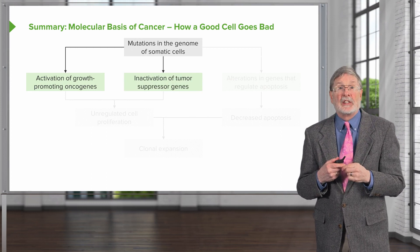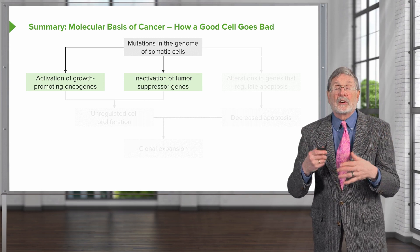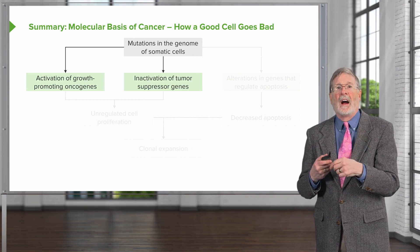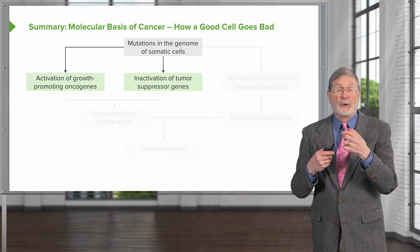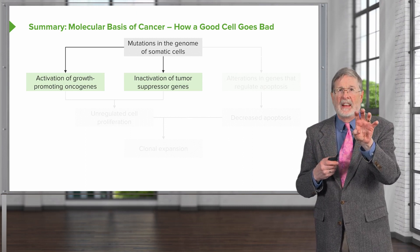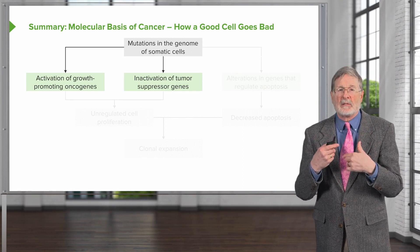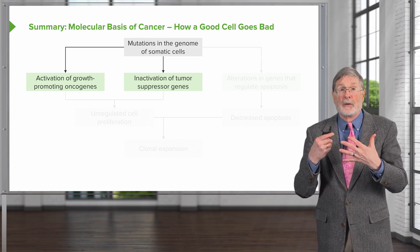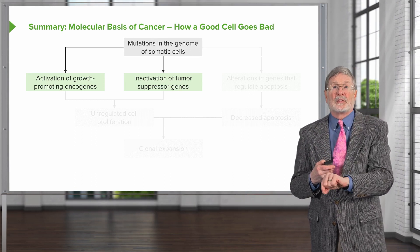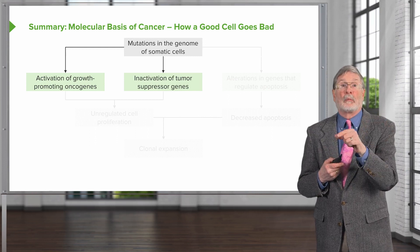Alternatively, you can have inactivation of tumor suppressor genes. As we've evolved over time, cells know there is the potential to acquire proliferation due to mutations. So there are a variety of genes that inhibit normal proliferation — it's a very tightly tuned set of mechanisms in normal cells. There's normal turnover and normal suppression of that turnover. So if we inactivate tumor suppressor genes, it will have as profound an effect as activating growth-promoting oncogenes.